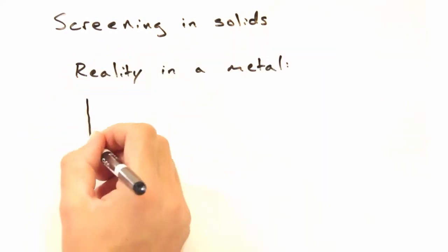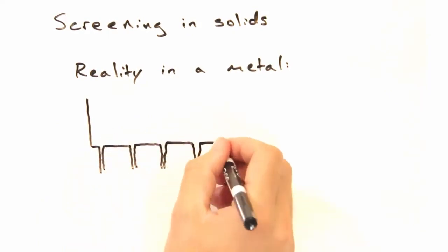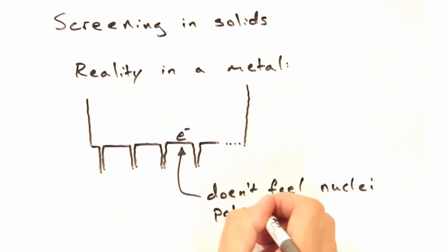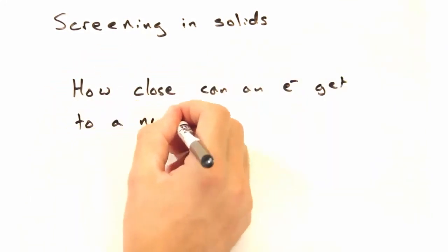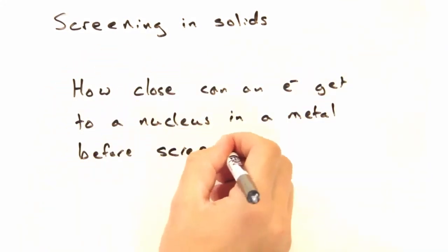In practice, real metals have potentials like this, where screening is highly effective unless the electron is very close to the nuclei. The question then is, how close can an electron get to a nucleus in a metal before screening breaks down?